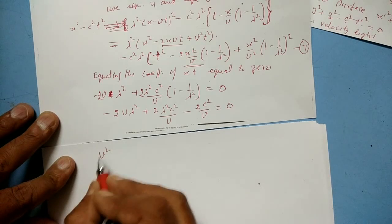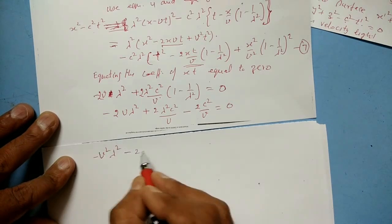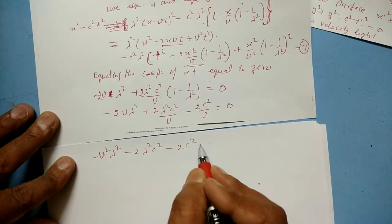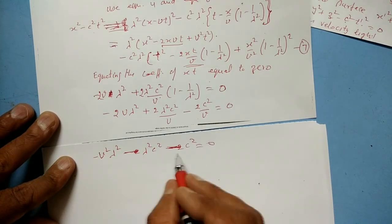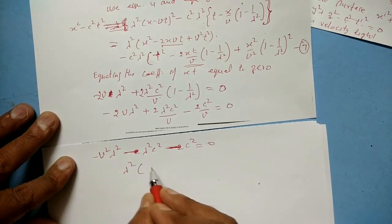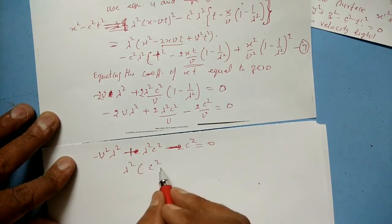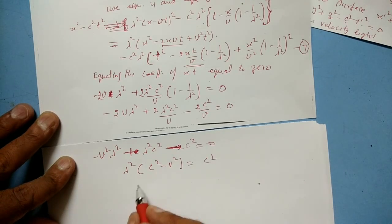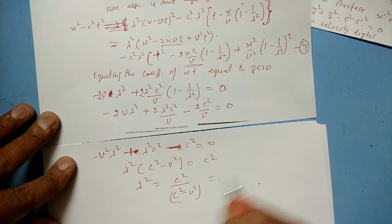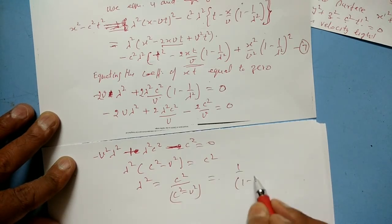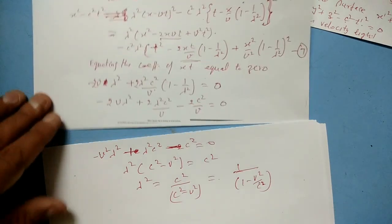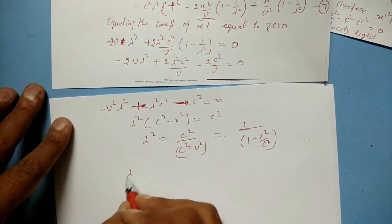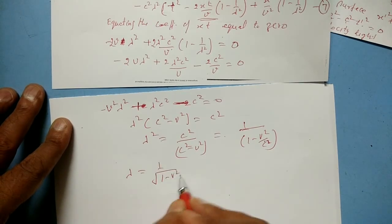Factoring out 2, we get v²λ² - 2λ²c² - c² equals zero. Rearranging, λ²(c² - v²) = c², so λ² = c²/(c² - v²), giving λ = 1/√(1 - v²/c²).